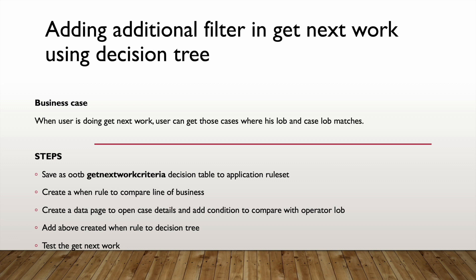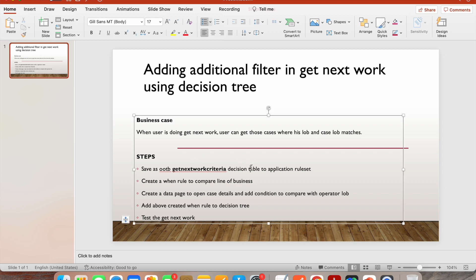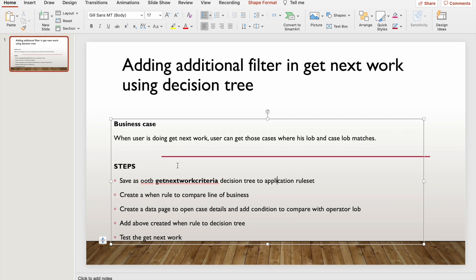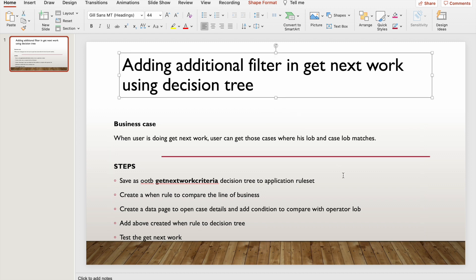The steps are straightforward. First, save the OOB Get Next Work decision tree to the application ruleset. Second, create a when rule to compare the line of business. Third, create a data page to open the case and get the LOB of the case, then compare with the operator LOB. Fourth, add the when rule to the decision tree. Finally, test Get Next Work.